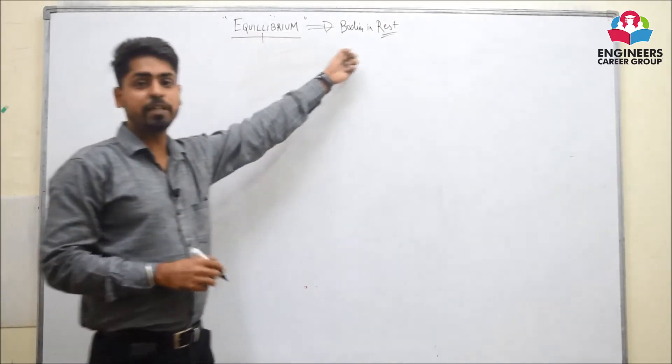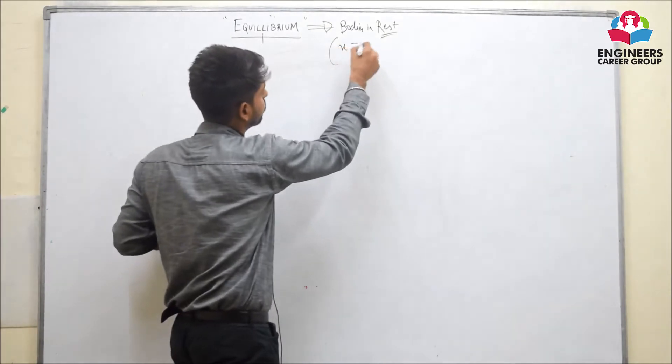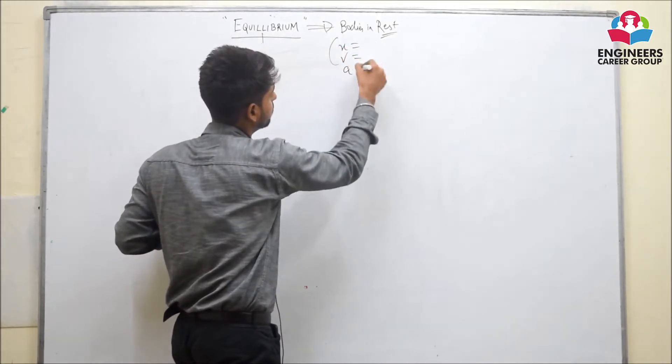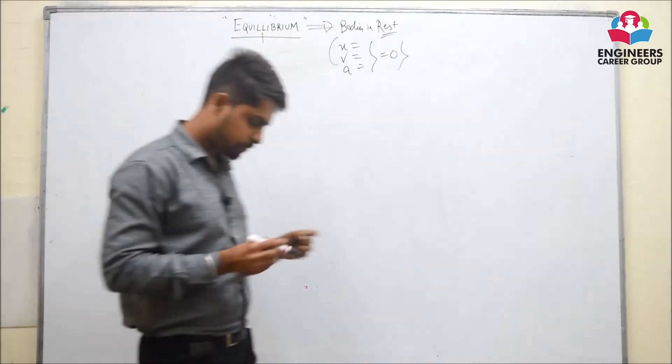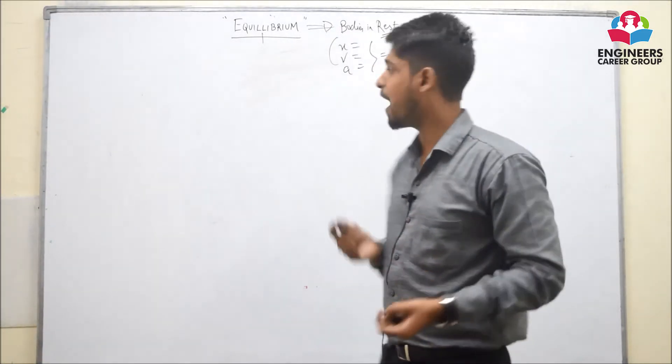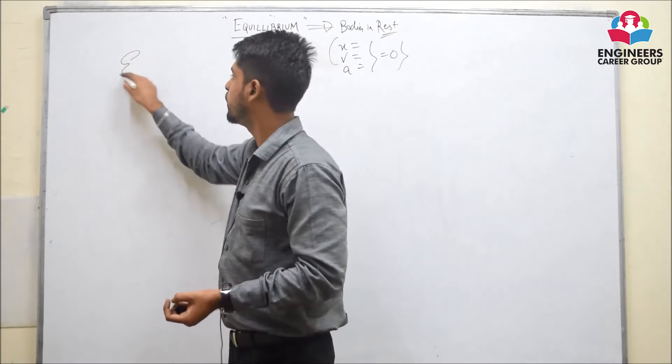Now what does bodies at rest mean? Displacement, velocity and acceleration, all parameters are equal to zero. Now, let us understand this topic with a very suitable example.